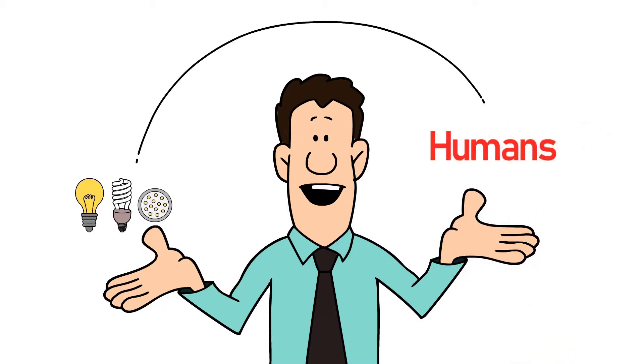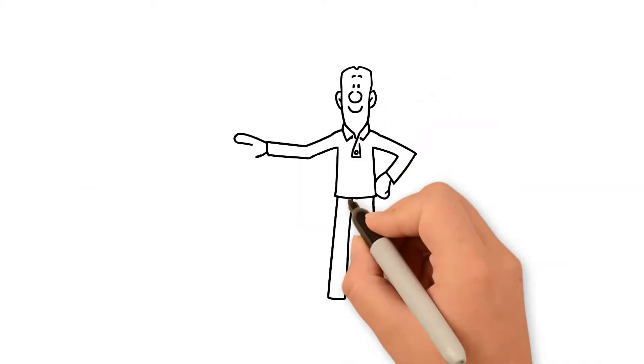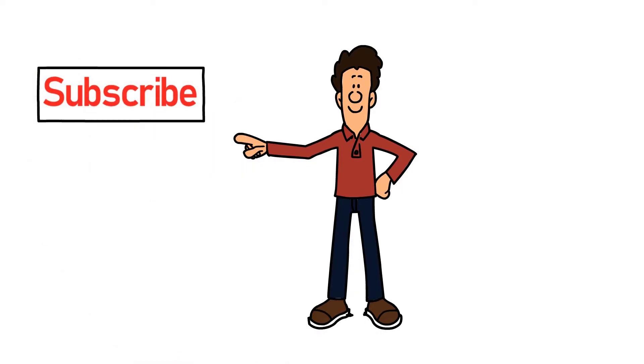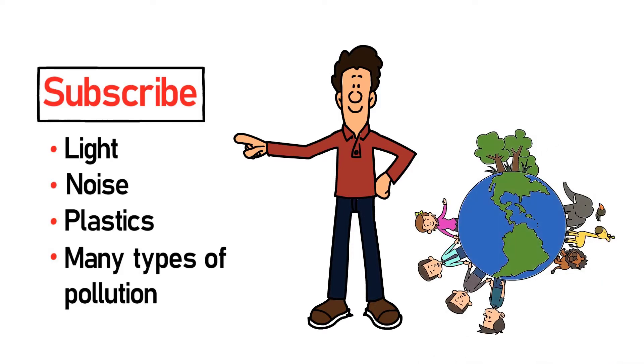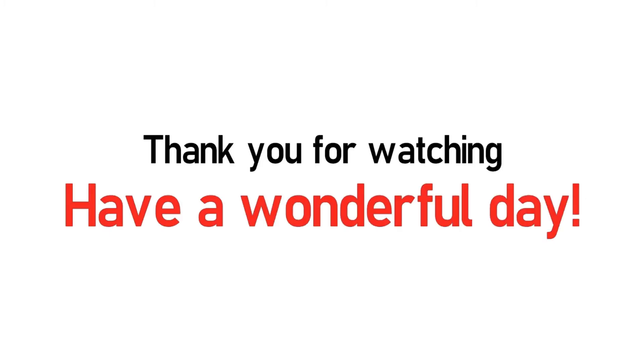We discussed light pollution and how it affects humans, but what about animals? Subscribe and join us on our journey as we dive into light, noise, plastics and many types of pollution to see how they affect the varieties of life on Earth. Thank you for watching and have a wonderful day.